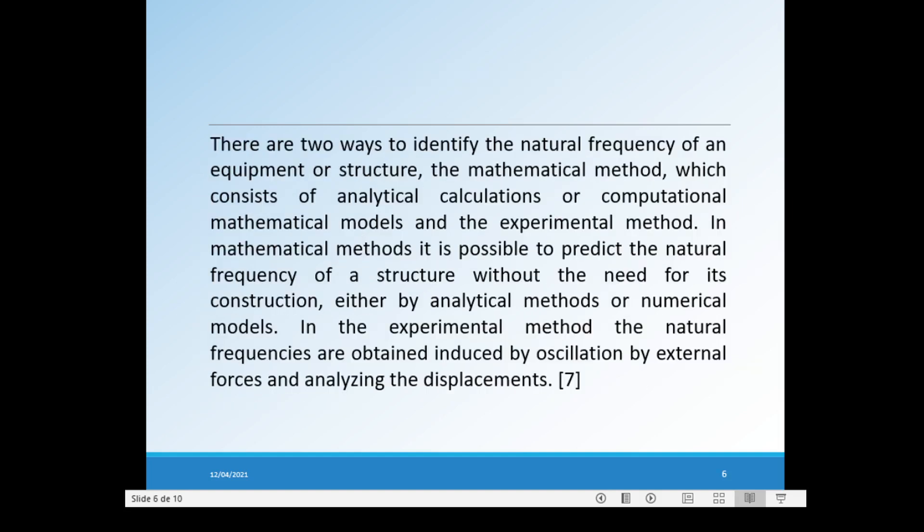There are two ways to identify the natural frequencies of equipment or structures. The mathematical method, which consists of analytical calculations or computational mathematical models, and the experimental method. It is possible to predict the natural frequencies of a structure without the need for its construction, either by analytical methods or numerical methods. In the experimental method, the natural frequencies are obtained by inducing oscillation by external force and analyzing the displacement. We can see more about this in a selected reference.